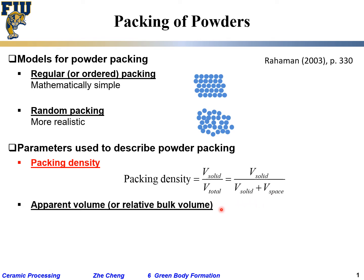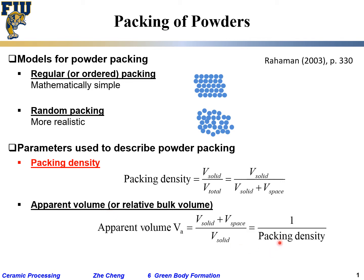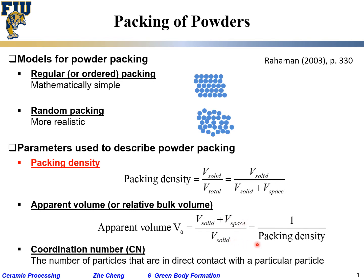A related but less commonly used parameter is so-called apparent volume, or relative bulk volume, which is essentially the inverse of relative packing density — the solid volume plus porosity volume divided by the solid volume. Another factor we may come across, similar to atom packing, is the coordination number: the number of nearest neighboring particles that are in direct contact with your particle of interest.